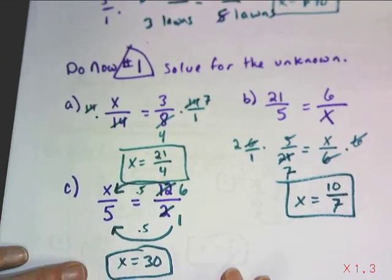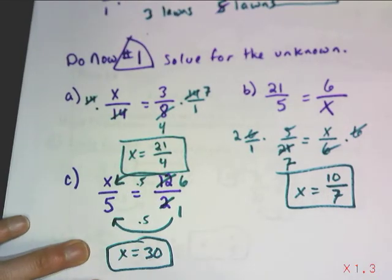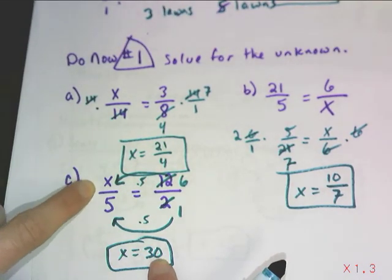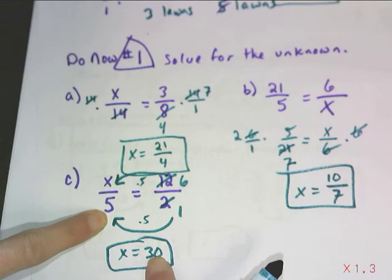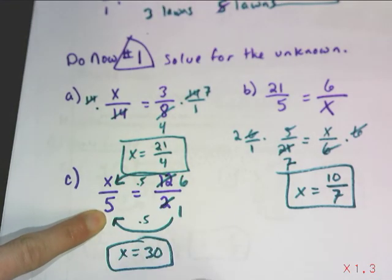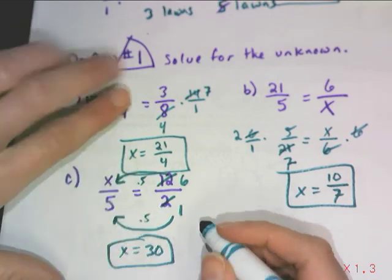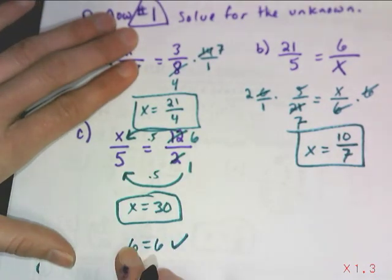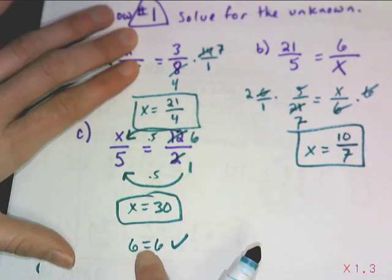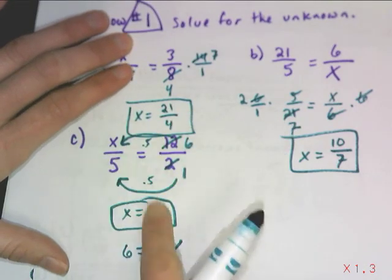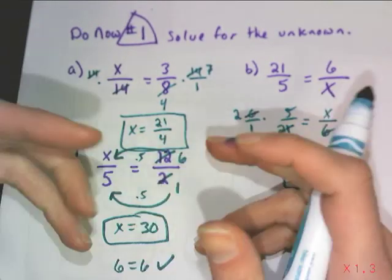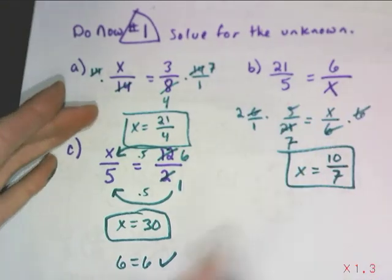And just like any other equation that we do, you can do a mental check with these because there's only one solution to this. If I divide 30 by 5, it is 6. 30 divided by 5 is 6. If I divide 12 by 2, it's also 6. So 6 equals 6. So with this stuff, it might be worth your time, especially if it's not so obvious to do it mentally, to go ahead and plug your value in for here. Do the math, and the left should equal the right.